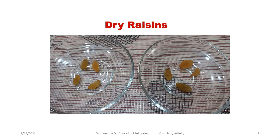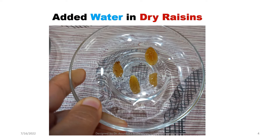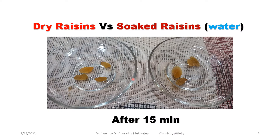We are going to do some simple experiments using dry resins. Here we can see that we have taken dry resins in two different plates. In one plate, an adequate amount of water has been added so that the resins are dipped completely and there is enough water so that the process can take place. Now you can see, if I compare the dry resins with the soaked resins, just within 15 minutes the soaked resins are already enlarged in shape.